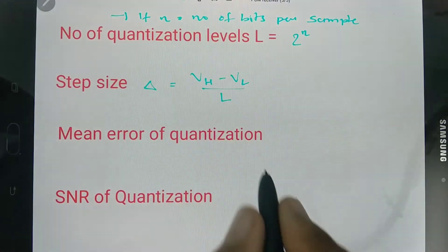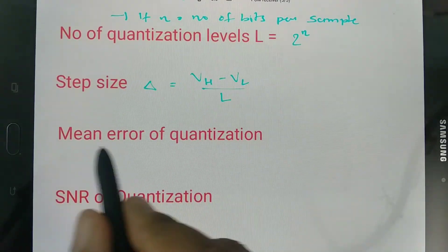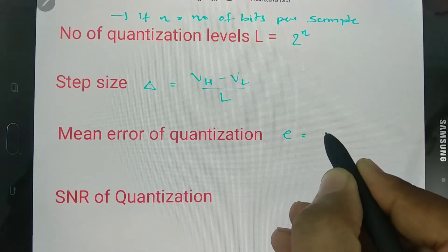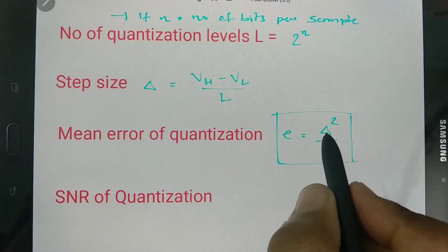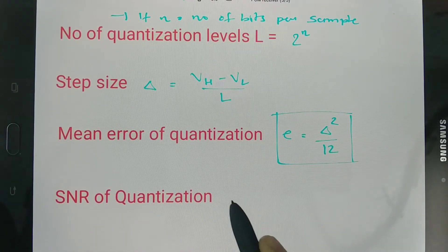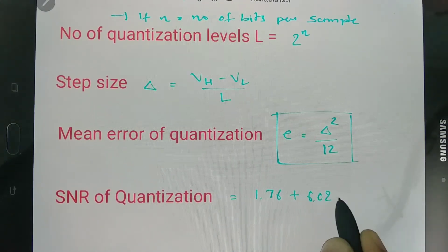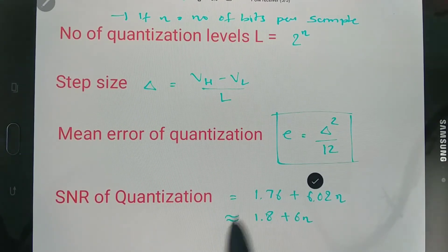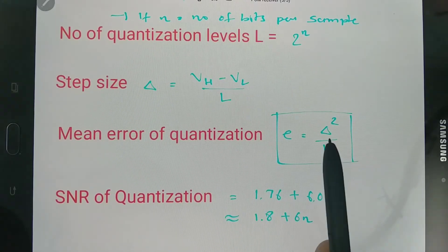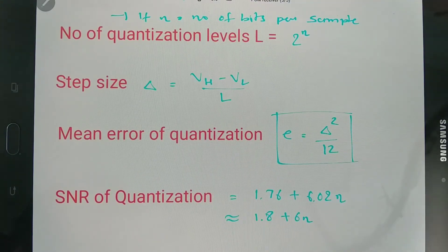Mean square error, which I have derived in my previous session on quantization, is calculated as delta squared divided by 12. Signal-to-noise ratio SNR can be calculated as 1.76 plus 6.02n. In some books you will find it given as 1.8 plus 6n. You can check out those videos for the full derivation. Here I am just giving the key formulas: how to calculate quantization levels, quantization error, and signal-to-noise ratio.